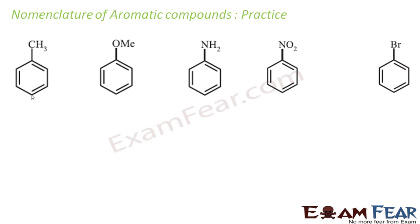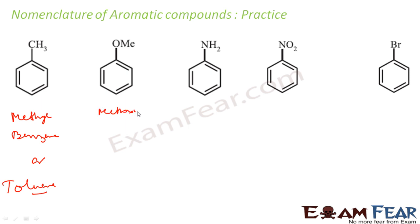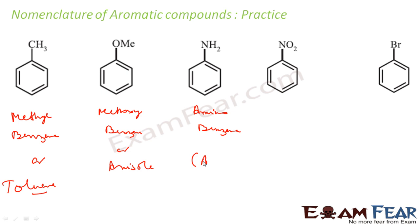This compound with a methyl group is called methylbenzene, or by its common name toluene. The OMe compound is called methoxybenzene as its IUPAC name, and its common name is anisole. The NH2 compound is called aminobenzene, with common name aniline. The nitrogen compound is called nitrobenzene, and the bromo compound is bromobenzene.